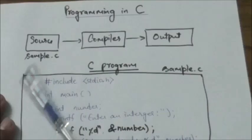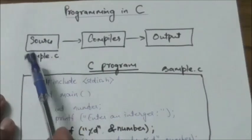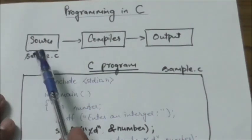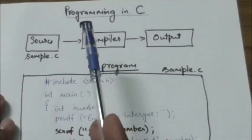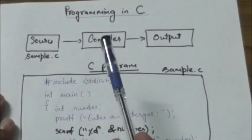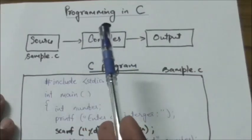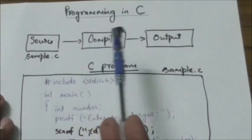So when you write a program, the source file which contains your program must be run through a compiler. The compiler checks for errors, and once it finds that there is no error in the program, it compiles the code.